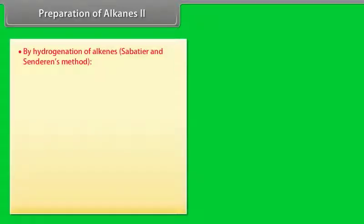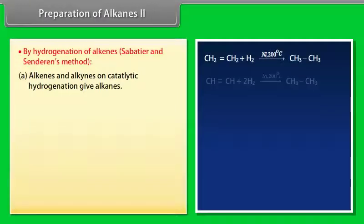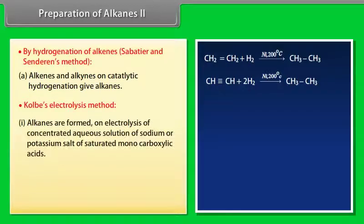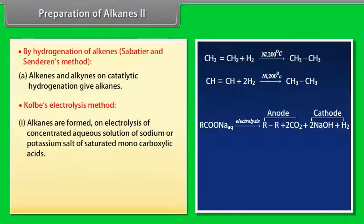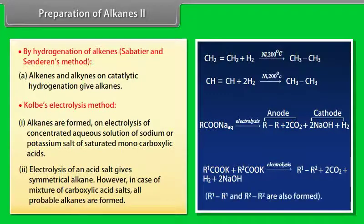Preparation of alkanes part 2: By hydrogenation of alkenes, Sabatier and Sanderan's method, alkenes and alkynes on catalytic hydrogenation gives alkanes. Kolbe's electrolysis method: Alkanes are formed on electrolysis of concentrated aqueous solution of sodium or potassium salt of saturated monocarboxylic acids. Electrolysis of an acid salt gives symmetrical alkane. However, in case of mixture of carboxylic acid salts, all probable alkanes are formed.